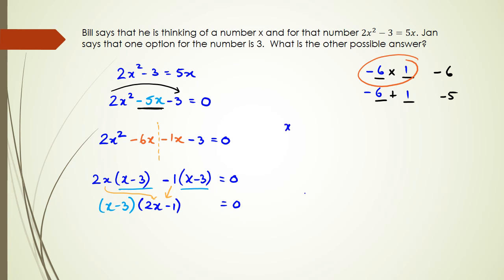That means I've got x minus 3 equals to 0, or 2x minus 1 equals to 0. In my first equation, that's nice and easy, because I can see that x is equal to 3. In my second equation, I've got 2x is equal to positive 1, because when I take negative 1 to the other side, it's positive 1. And then x is equal to 1 over 2.